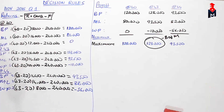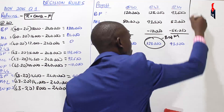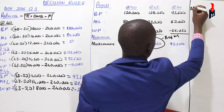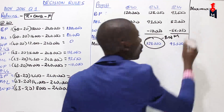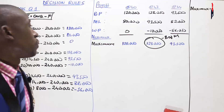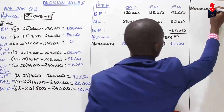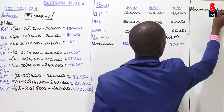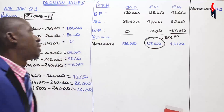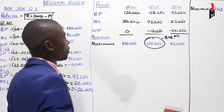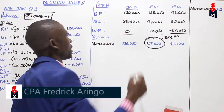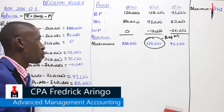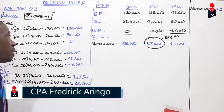So if we are to advise this company on the selling price to adopt using MaxiMax, we can comfortably select a price of 43 shillings. At 43 shillings, that is the best selling price to adopt using MaxiMax. So we are done with MaxiMax.